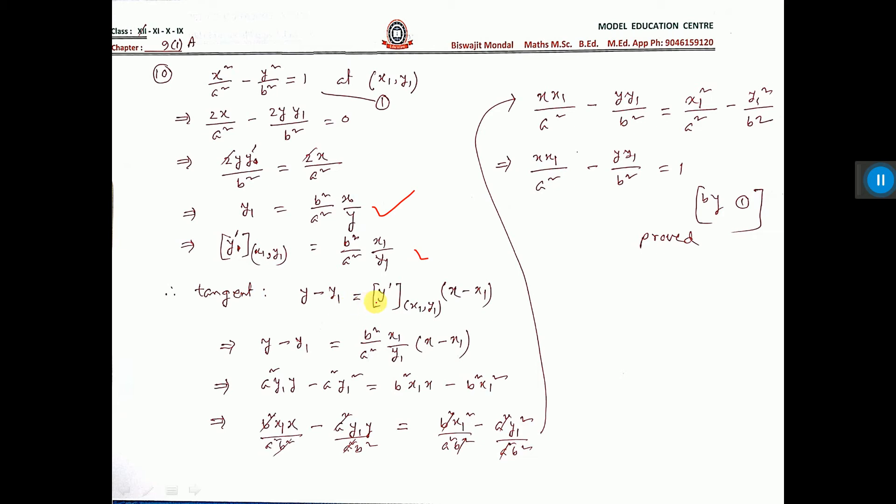Tangent formula y minus y1 equal to y dash at the point x1 y1 into x minus x1. This value you put, already we have got before. You put, then cross multiply, it is coming this.